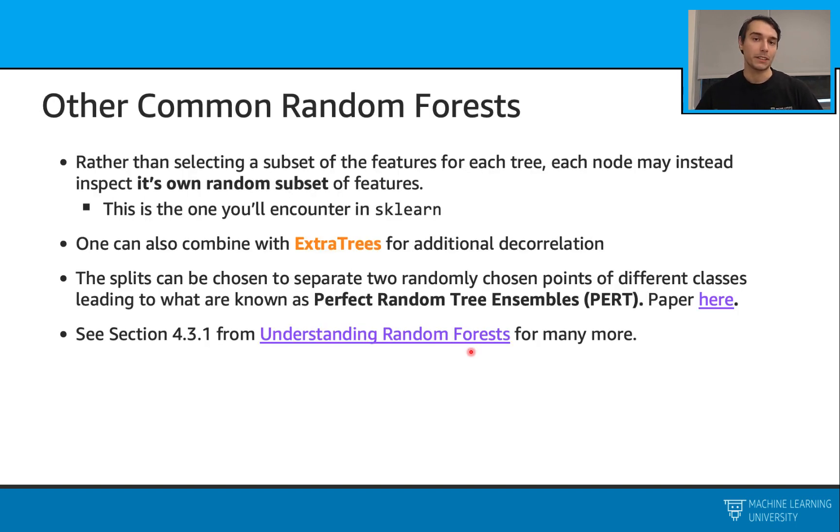Let's also mention some different implementations of this random forest model. We can change the way that we use our features. For example, as we first learned this model, we said that we are using a subset of the features for each tree. But we can go one more step and let each node this time select a random subset of the features. And in fact, this is the implementation that you will encounter in the sklearn library.